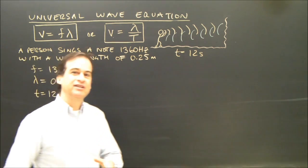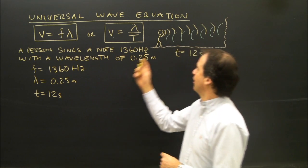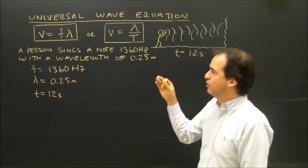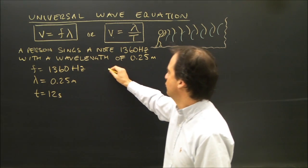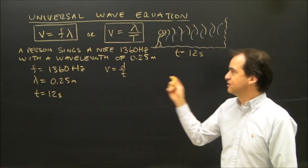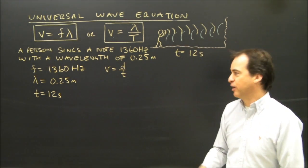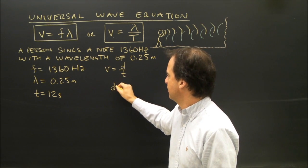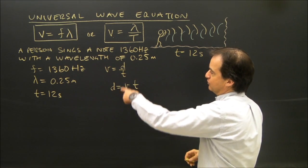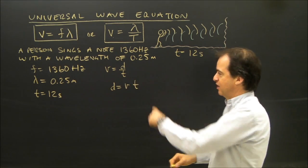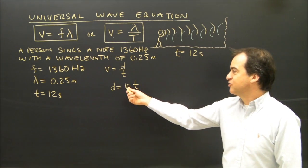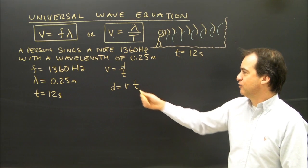I want to know the distance the mountain was at. Distance implies I need to know the velocity and the time, so I'm going to use the formula V equals D over T. Rearranging, D is equal to V times T — that's the distance the wave traveled. I need to know how fast the wave was traveling and how long it was traveling for.